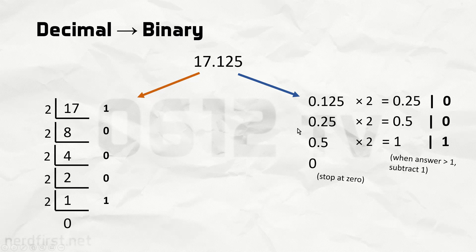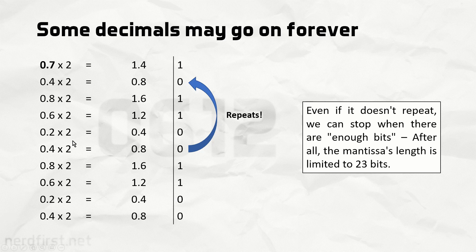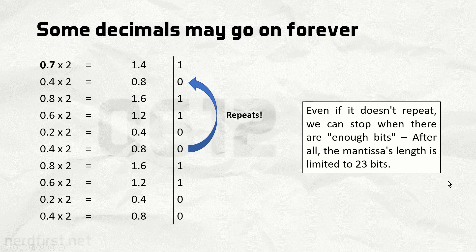This was an extremely simple case, but there may be decimal values that keep going nonstop. For example, take 0.7 — no matter what you do, you will never end up at 1. If you get 1.6, you take out the 1, continue with 0.6, and it never ends. We know this for sure because there is a point where it leads back to essentially the same thing — a repeating pattern. There are two ways to stop: either when we recognize a repetition, or when we have enough bits to work with. Since our mantissa has a limited length, once we have enough bits, that's that.